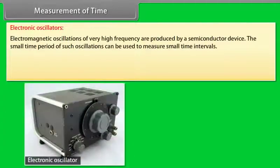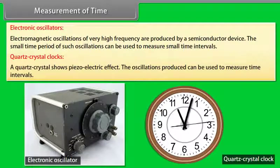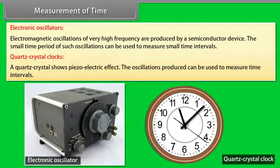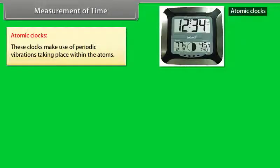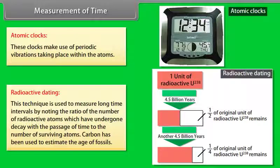Electronic oscillators: electromagnetic oscillations of very high frequency are produced by a semiconductor device. The small time period of such oscillations can be used to measure small time intervals. Quartz crystal clocks: a quartz crystal shows piezoelectric effect. The oscillations produced can be used to measure time intervals. Atomic clocks: these clocks make use of periodic vibrations taking place within the atoms. Radioactive dating: this technique is used to measure long time intervals by noting the ratio of the number of radioactive atoms which have undergone decay with the passage of time to the number of surviving atoms. Carbon has been used to estimate the age of fossils.